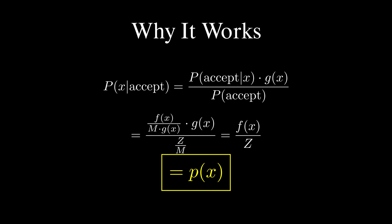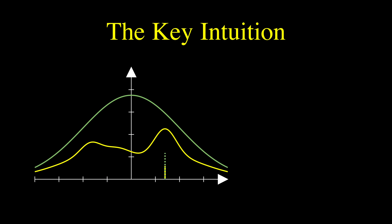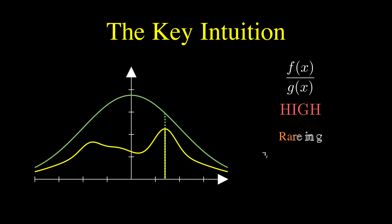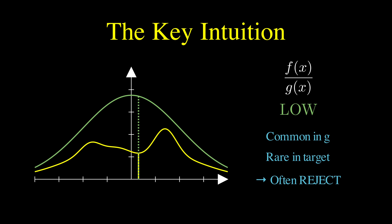The real magic — the intuition that makes this all click — is understanding what the ratio f over g fundamentally represents. When f/g is high at some point, it means that point is very likely in our target distribution but rarely proposed by g, so when g does propose it, we absolutely must accept it, because we might not see it again for a long time — it's like finding a rare gem we can't afford to throw away. Conversely, when f/g is low, g keeps proposing this point over and over, but it's actually uncommon in our target, so we should usually reject it to avoid oversampling that region.